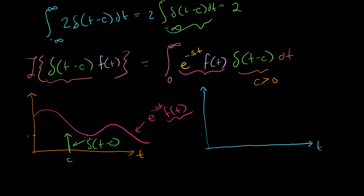So what happens when I multiply these two? Everywhere when t equals anything other than c, the Dirac delta function is 0 — it's 0 times anything, so it's going to be 0 everywhere, except something interesting happens at t equals c. At t equals c, the value is going to be the value of the Dirac delta function times whatever height the other function is at that point — this function evaluated at c. So it's going to be e to the minus sc times f of c.